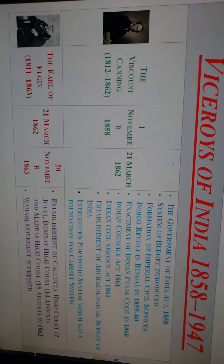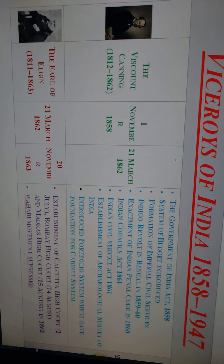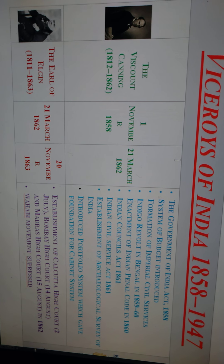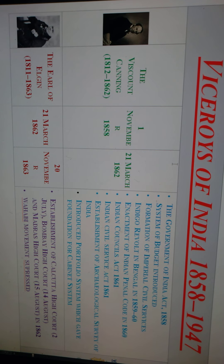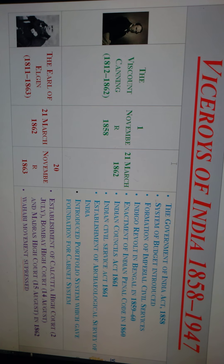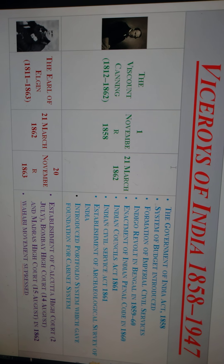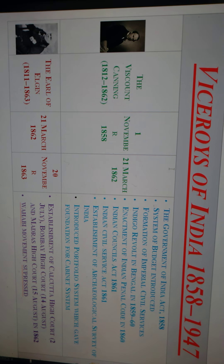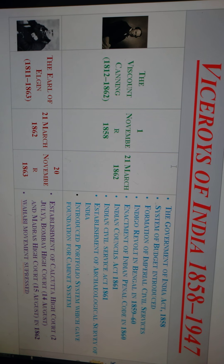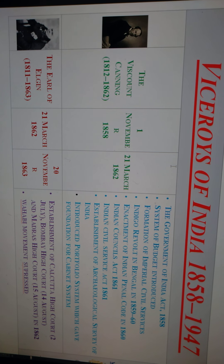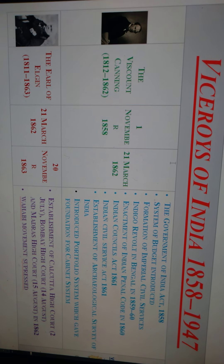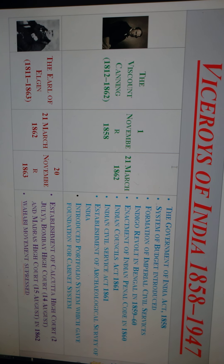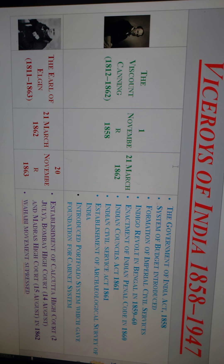During Lord Canning's period: enactment of the Indian Penal Code in 1860, the Indian Council Act 1861, the Indian Civil Service Act of 1861, and the establishment of the Archaeological Survey of India. He also introduced the portfolio system, which gave the foundation for the cabinet system.